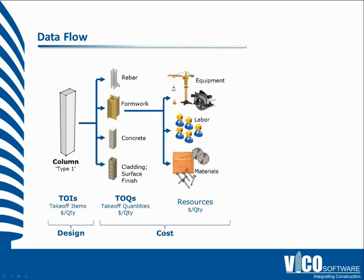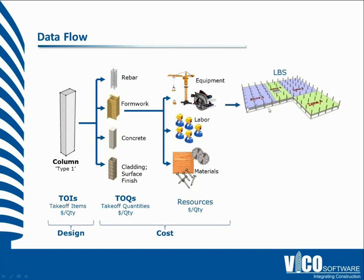This layer does represent tasks, but it's too granular for the way we want to plan and control schedules. If we had 500 columns in the project, you wouldn't want to have four methods for each one — you wouldn't want to have 2,000 tasks to track. So we needed to aggregate these back together to match how you really do plan construction today, and we do that by adding zones to the model.